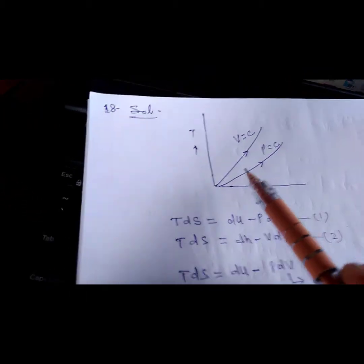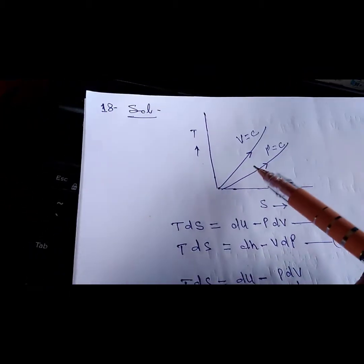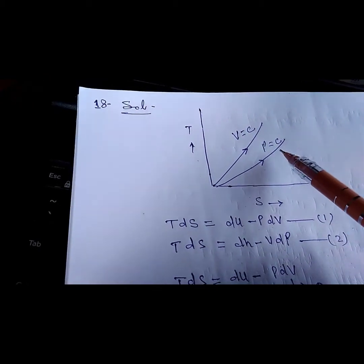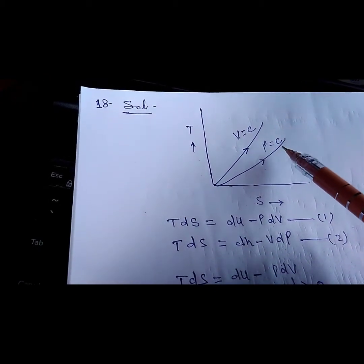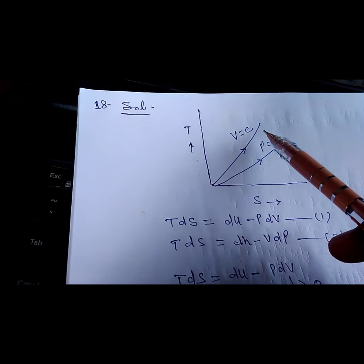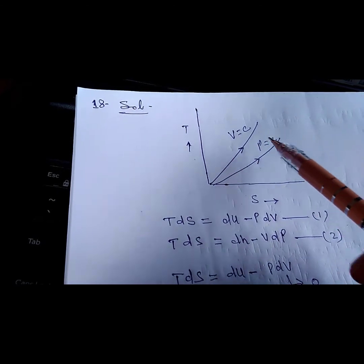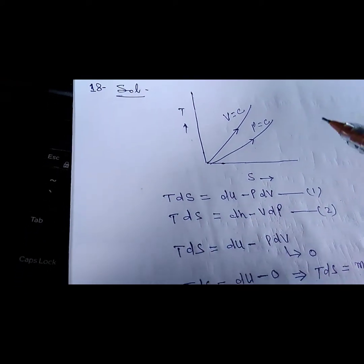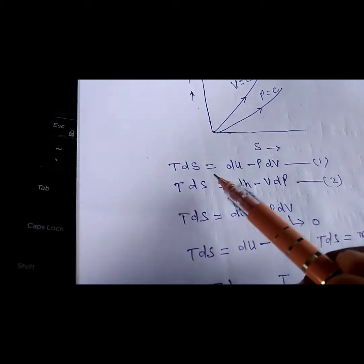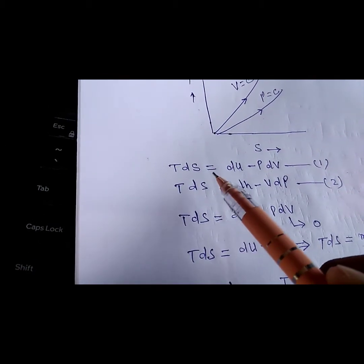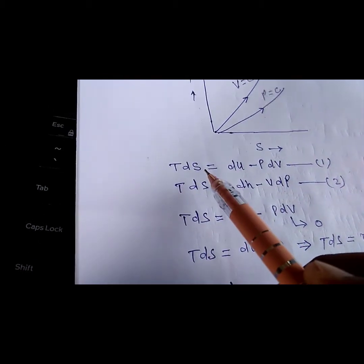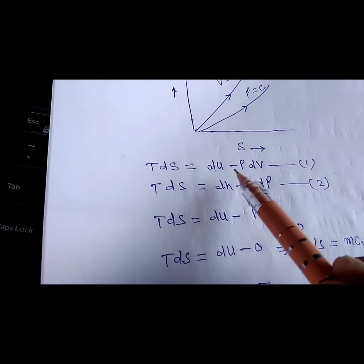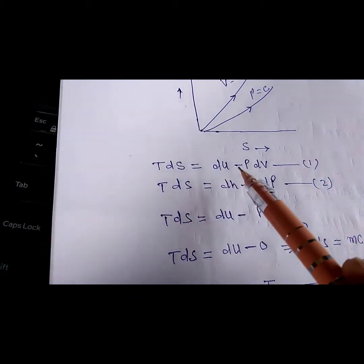I have drawn the T-S diagram. This is the constant volume line and this is the constant pressure line. We have to find the ratio of the slopes of the constant pressure line and the constant volume line. We have studied the TDS equations at our B.Tech level.